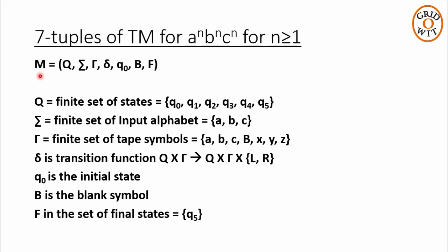Now let us see the seven-tuple for the Turing machine accepting strings of the type a^n b^n c^n. We have six states from q0 to q5. The symbols a, b, and c are in the input alphabet. The tape symbols are a, b, c, blank, x, y, and z. The transition function has already been discussed through the transition diagram. q0 is the initial state, B is the blank symbol, and the set of final states contains state q5. That's all for this lecture. If you like the video, click the like button and subscribe to the channel for more videos. Thank you.